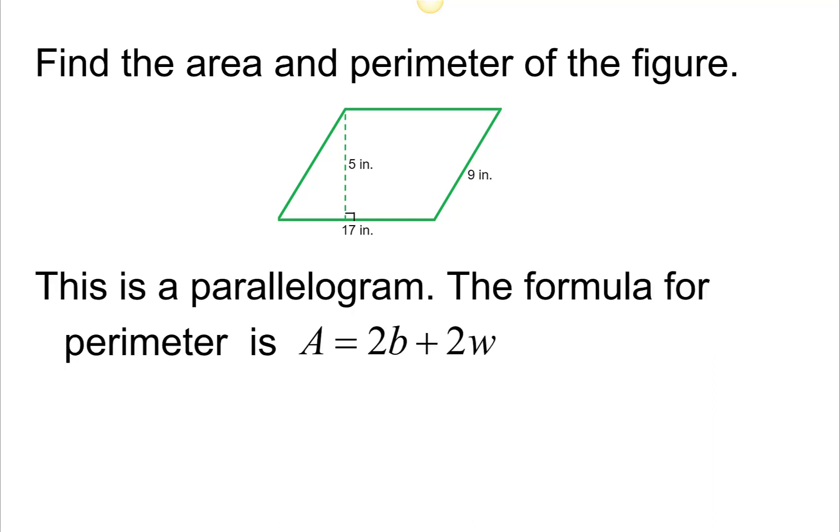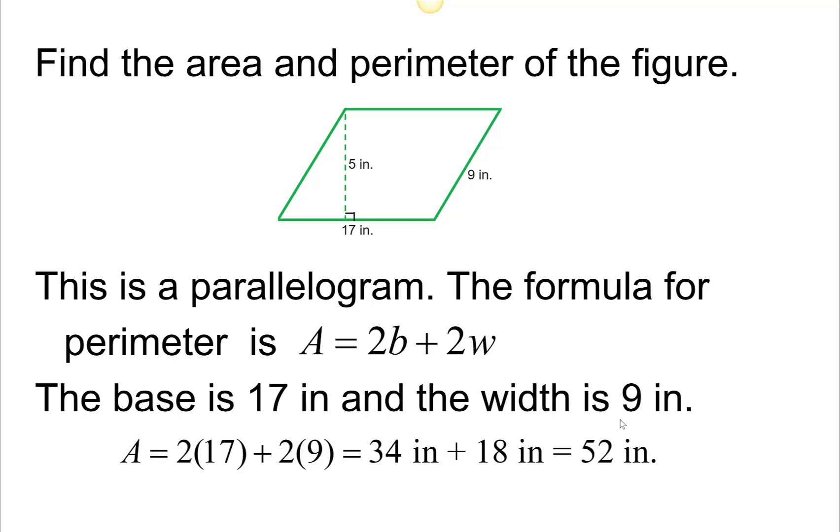The perimeter is the distance all the way around, so 17 plus 9 plus 17 plus 9, or 2 times the base, 2 times 17, plus 2 times the width of that side there, which is 9. We get 52 inches, and the units for the perimeter are the same units as the original measurements.